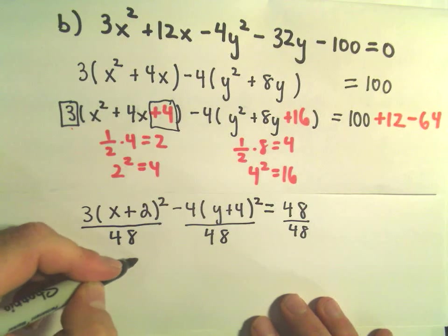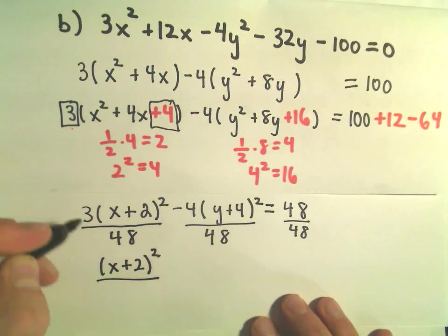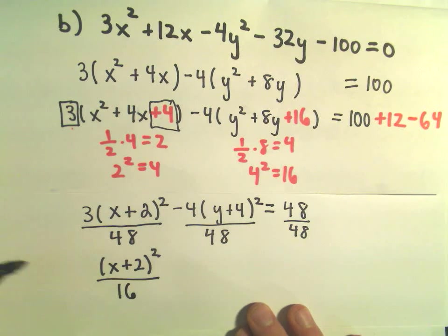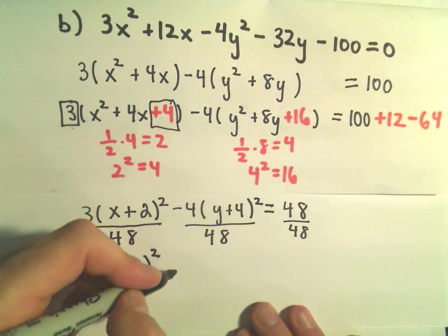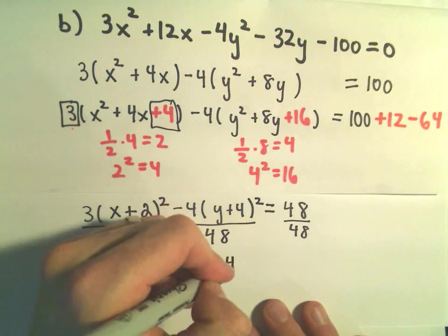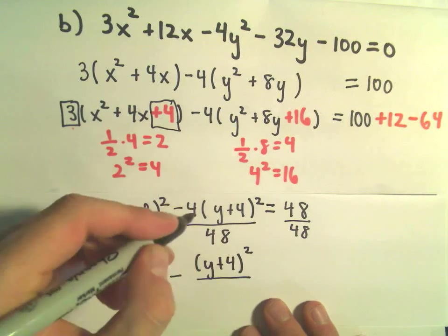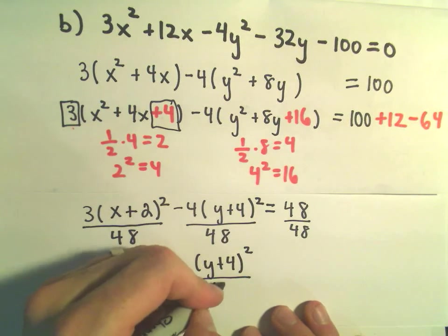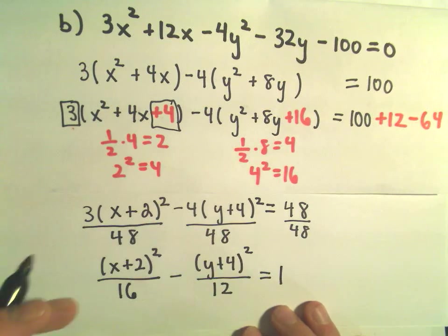So we would have x plus 2 squared. 3 divided by 48, I believe that would reduce to 1 over 16. We would have y plus 4 quantity squared. If we take 4 over 48, that's going to give us a positive 12 equals 1 on the right.